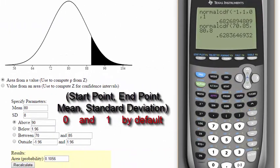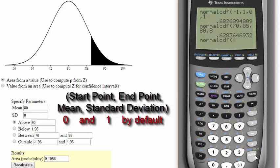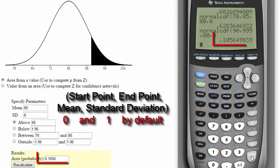You can use the normal CDF to find the area above or below a point. Go back to normal CDF under second vars. Now our start point is 90. We want to find scores above 90, so there's technically no endpoint. We can put in a very large number like 999, which is many standard deviations away from the mean. Next, put in the mean and standard deviation. As you'll notice, we have found the area between 90 and 999, and the results exactly match the applet on the left.